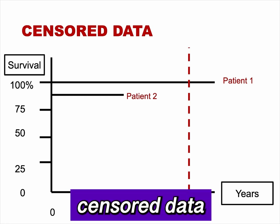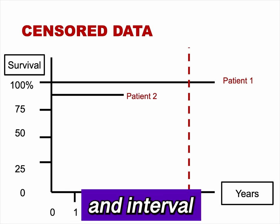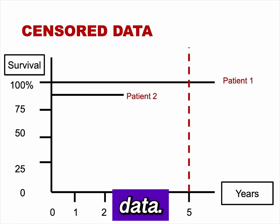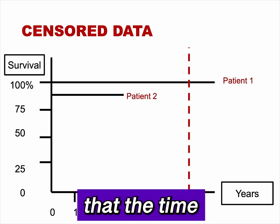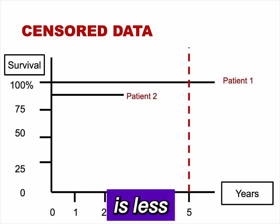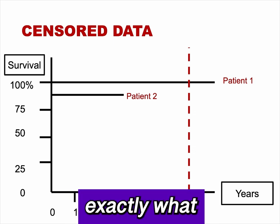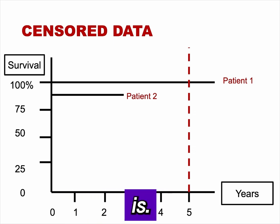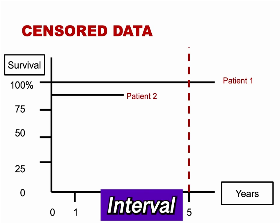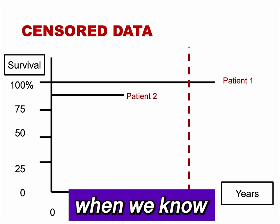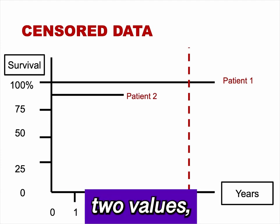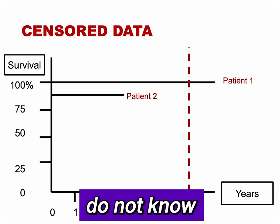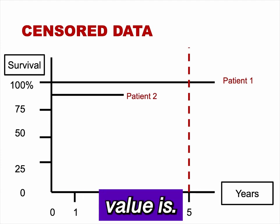There is also left-censored data and interval-censored data. Left-censored data occurs when we know that the time to event is less than some value, but do not know exactly what that value is. Interval-censored data occurs when we know that the time to event is between two values, but do not know exactly what that value is.